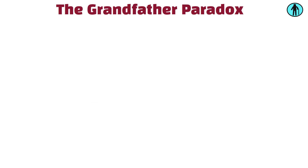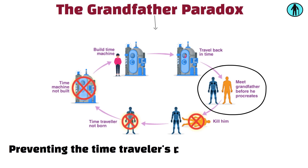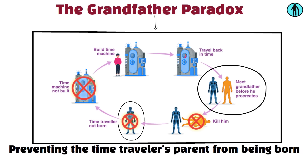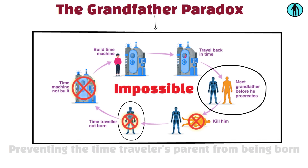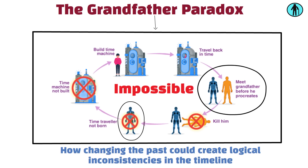The grandfather paradox occurs when a time traveler goes back in time and prevents their own grandparent from meeting their other grandparent, thus preventing the time traveler's parent from being born. This in turn would prevent the time traveler from being born, making their time travel impossible. It's a classic example of how changing the past could create logical inconsistencies in the timeline.